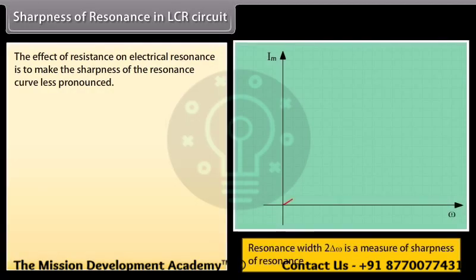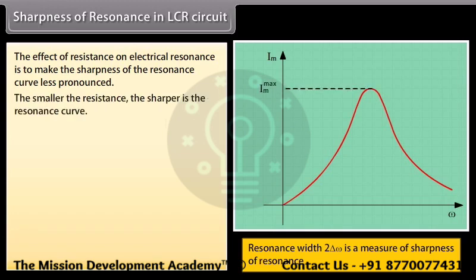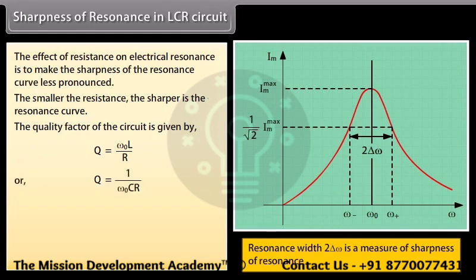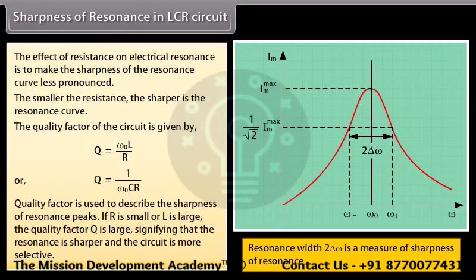The effect of resistance on electrical resonance is to make the sharpness of the resonance curve less pronounced. The smaller the resistance, the sharper the resonance curve. The quality factor Q of the circuit is given by Q = ω₀L/R = 1/(ω₀CR). Quality factor describes the sharpness of resonance peaks. If R is small or L is large, Q is large, signifying that the resonance is sharper and the circuit is more selective.